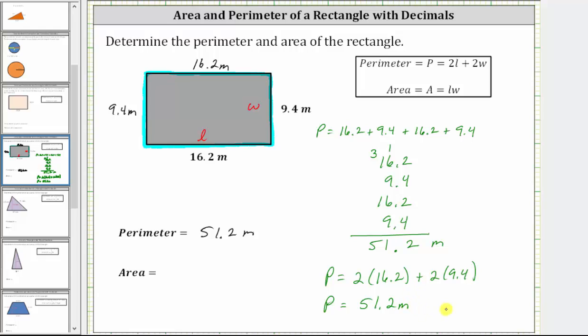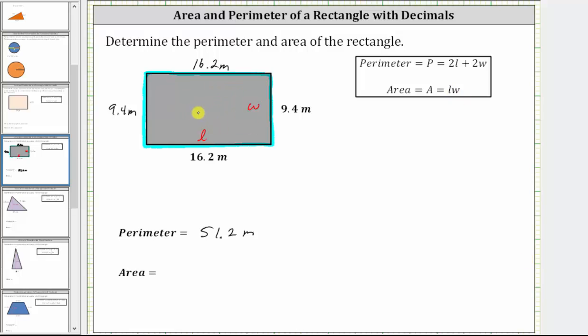And now let's determine the area. The area is equal to the number of square meters that will fit inside the rectangle. Because we have a rectangle, the area is equal to L times W or length times width, which means the area is equal to 16.2 meters times 9.4 meters, which will give us the units of meters squared.